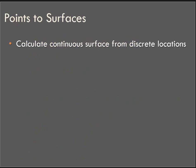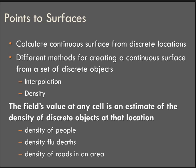And there's two basic methods for converting points to surfaces. We can calculate a continuous surface from discrete point locations. The different methods for doing this are interpolation and density surfaces. So the field's value at any cell in a raster is the estimate of a density of discrete objects at that location when we're talking about densities.